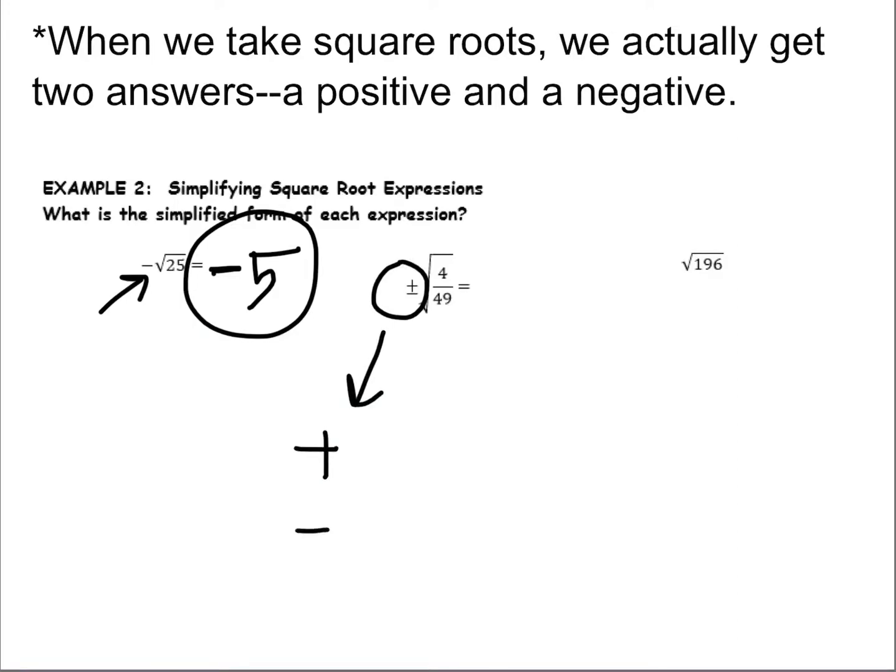This little symbol, if you saw it spread apart, is really a plus and a minus. So that's saying that we need both the positive and the negative. When I take the square root of a fraction, I take the square root of the top and the square root of the bottom. So positive and negative 2 sevenths is my answer for that one.